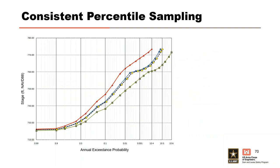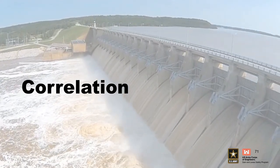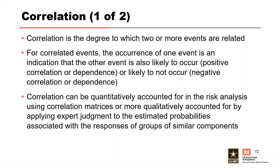Here is another example, this time for life loss consequences. You can see the results of independent sampling on the left and how consistent percentile sampling cleans things up on the right. This is also what consistent percentile sampling looks like when sampling the stage frequency curve — the general shape is maintained with each iteration. Correlation is the degree to which two or more events are related: for correlated events, the occurrence of one indicates the other is also likely to occur (positive correlation) or likely not to occur (negative correlation).